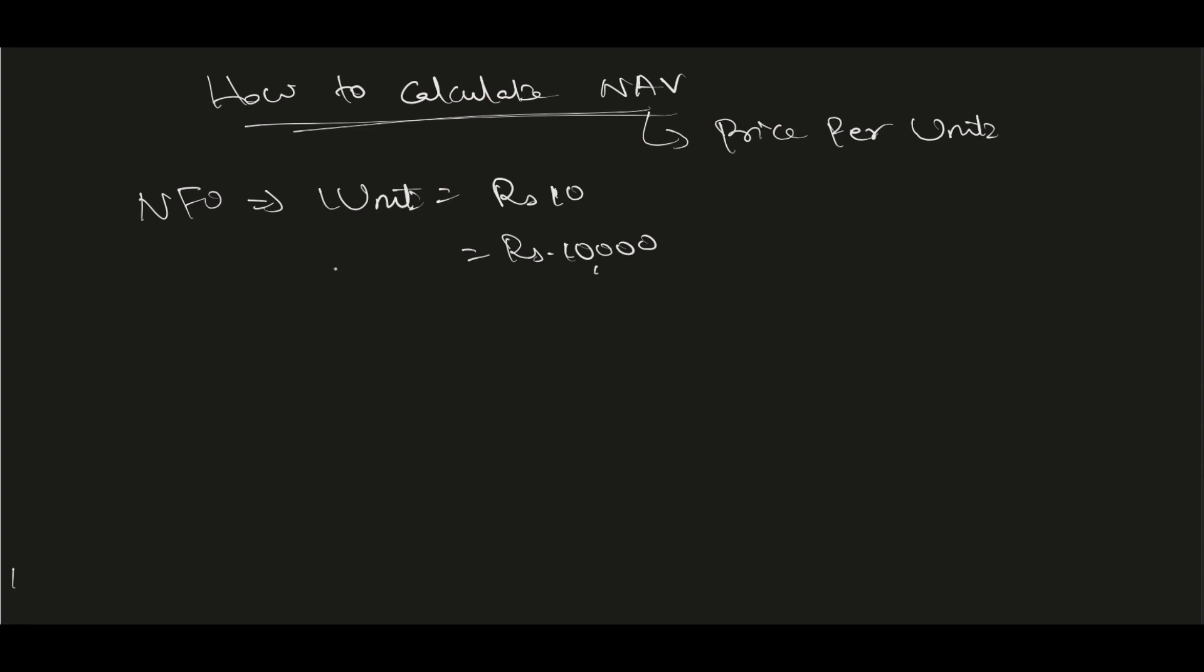When they get 10,000 rupees, that means they must have issued 1,000 units. So 1,000 units will come to 10,000 rupees. During this NFO they have received 10,000 rupees and issued 1,000 units.